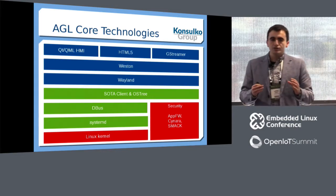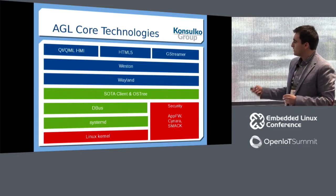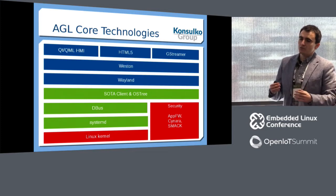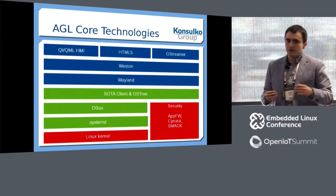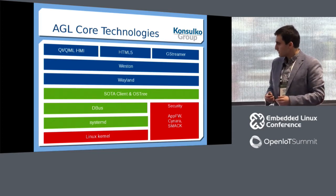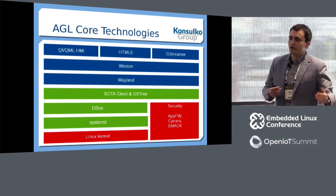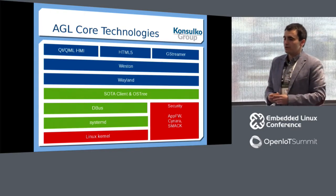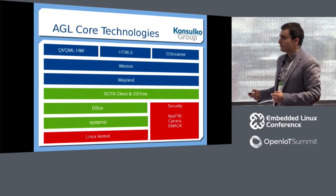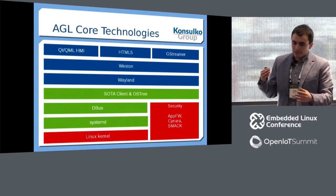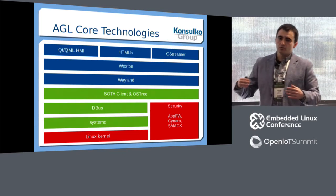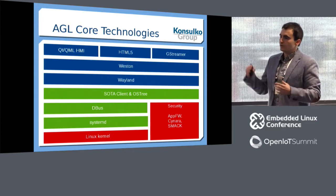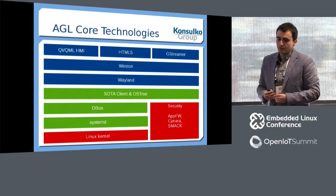D-Bus is used for communication, and it's important to say that the security model of Automotive Grade Linux is very special — it uses SMAC, Cynara, and an application framework. If you want to build an image of AGL for a new board, you should make sure that SMAC is enabled in the Linux kernel defconfig. SMAC provides isolation of applications at the kernel level. After that we have the Cynara project, which is also used in other projects such as Tizen. It's an open source tool for managing privileges of applications that are accessing peripheral devices.